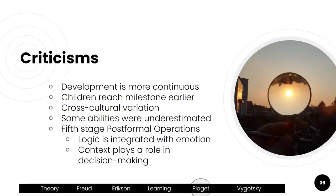Piaget did have his share of criticism. Critics say development is not discontinuous as he believed — it is more continuous. Researchers have shown Piaget may have been off a little bit with his age estimates for certain tasks. His theories were based on Western culture, so cross-cultural variations are not taken into account. And there is a fifth stage that he didn't really talk about, but others have developed since.